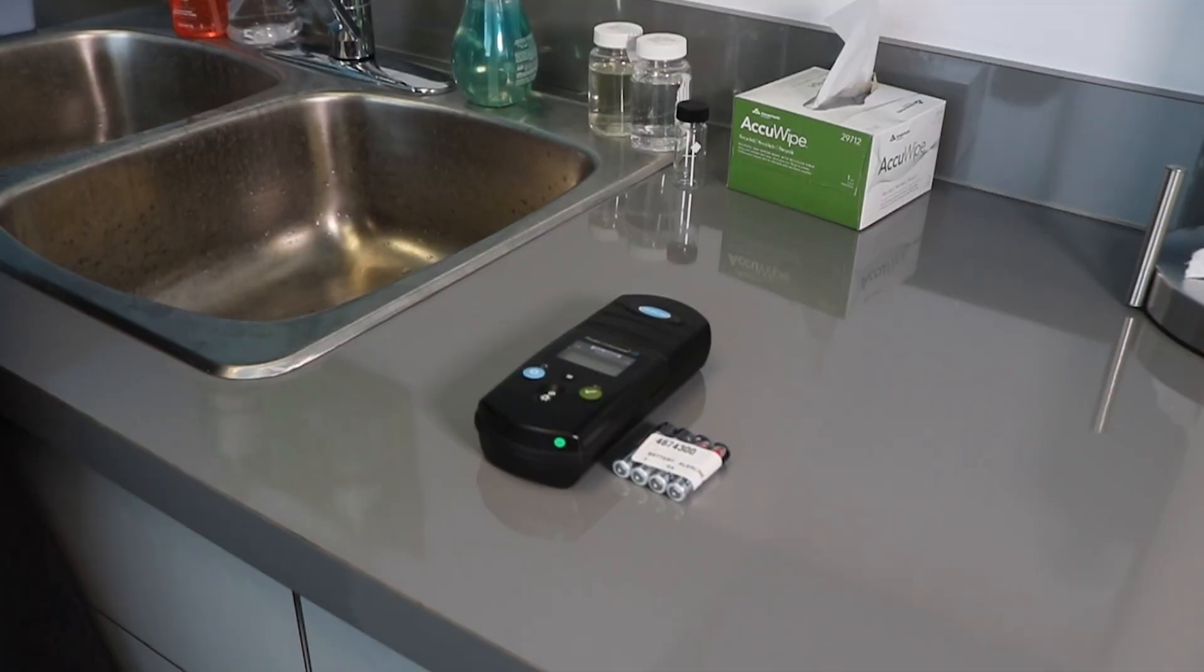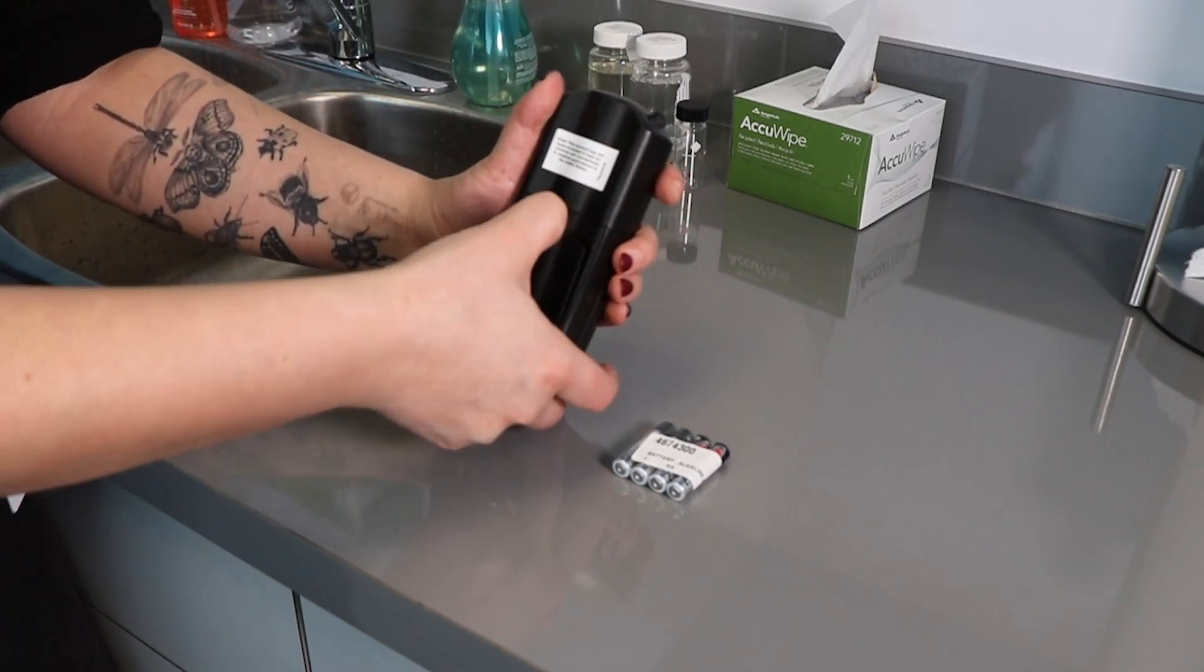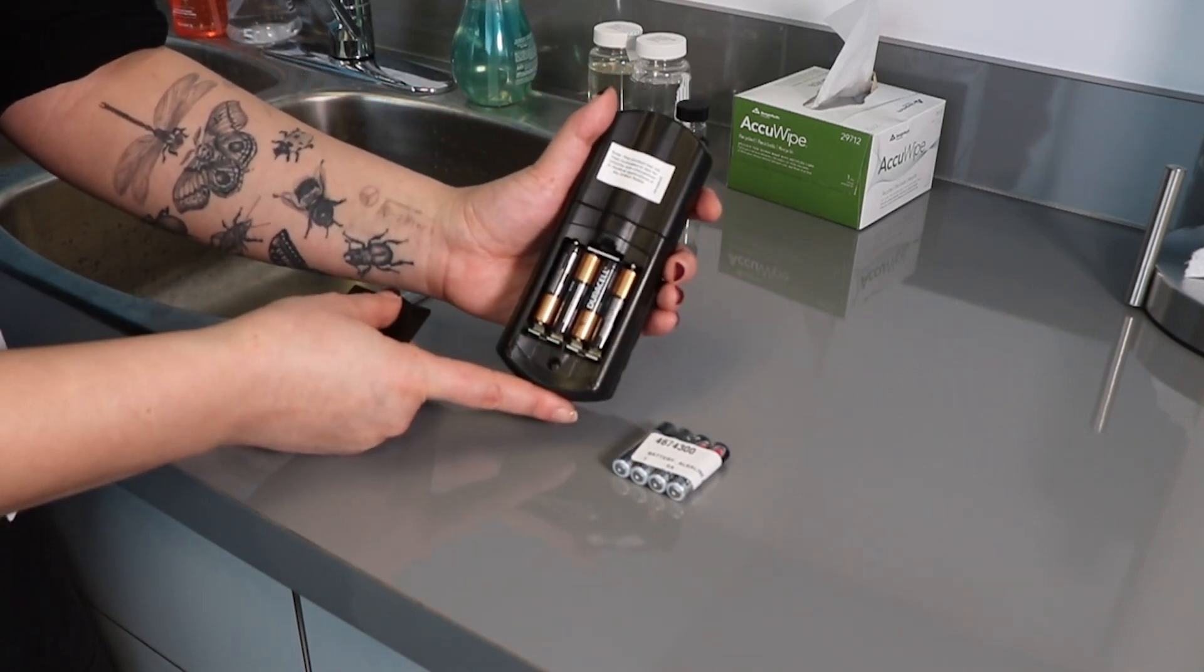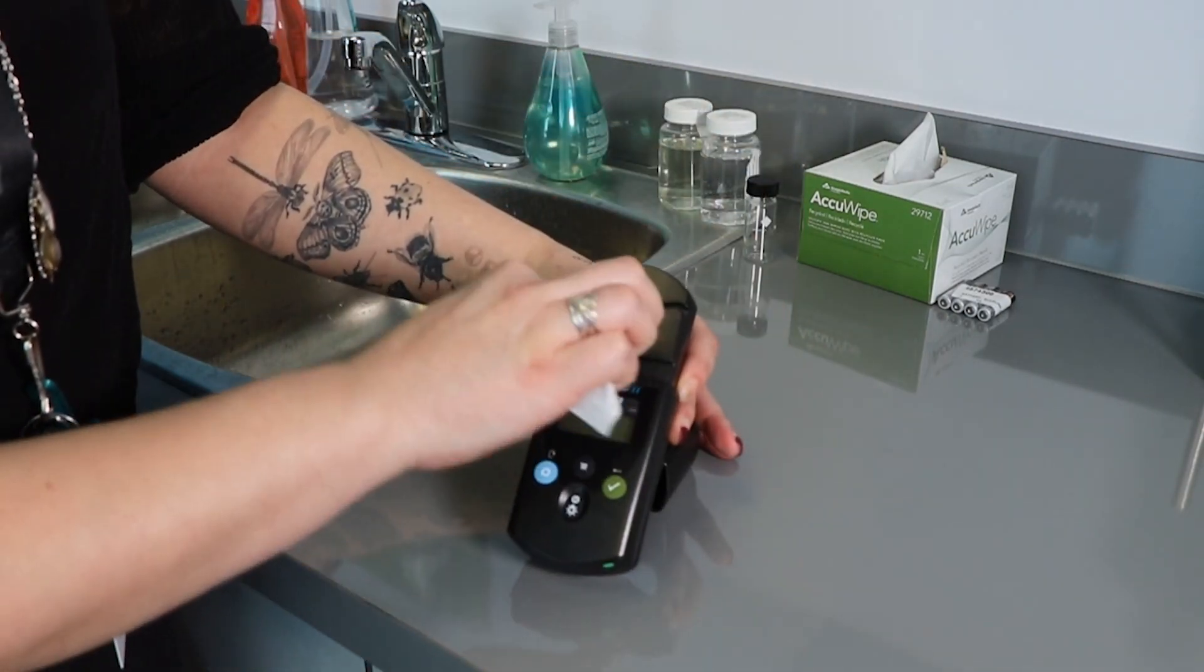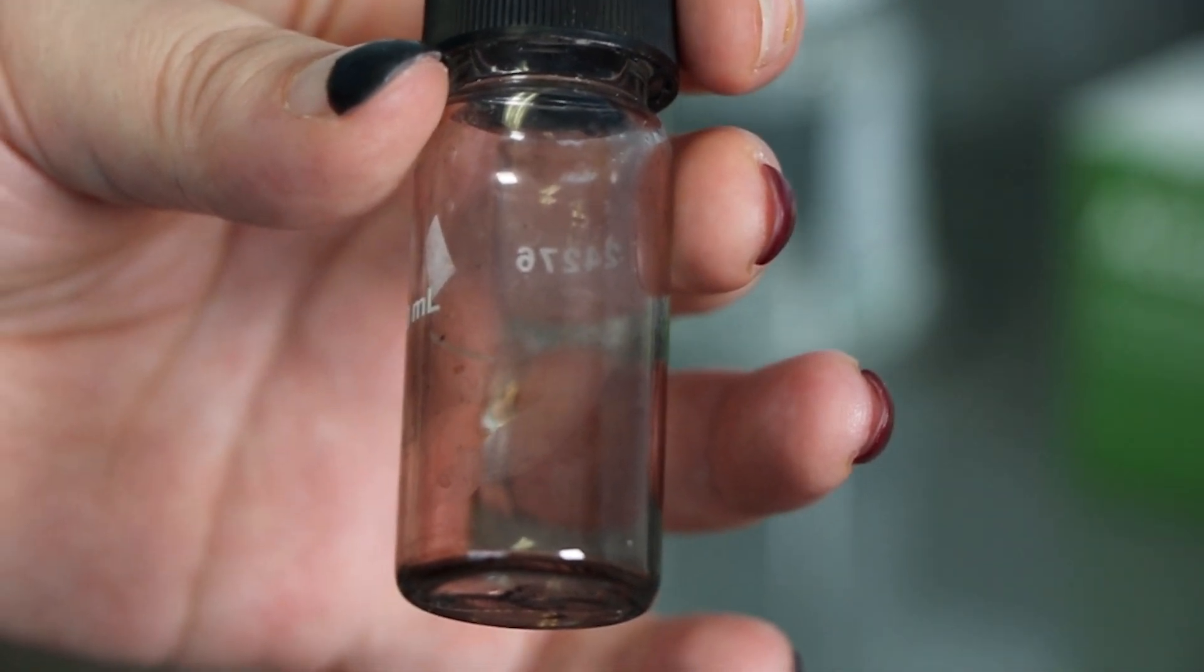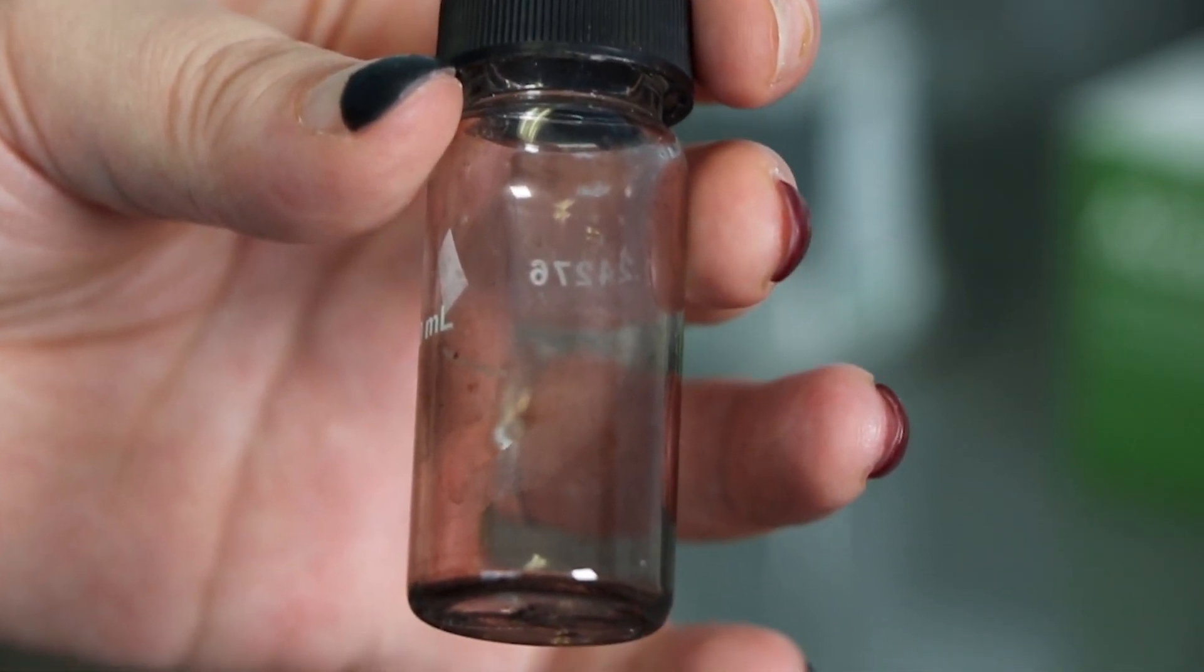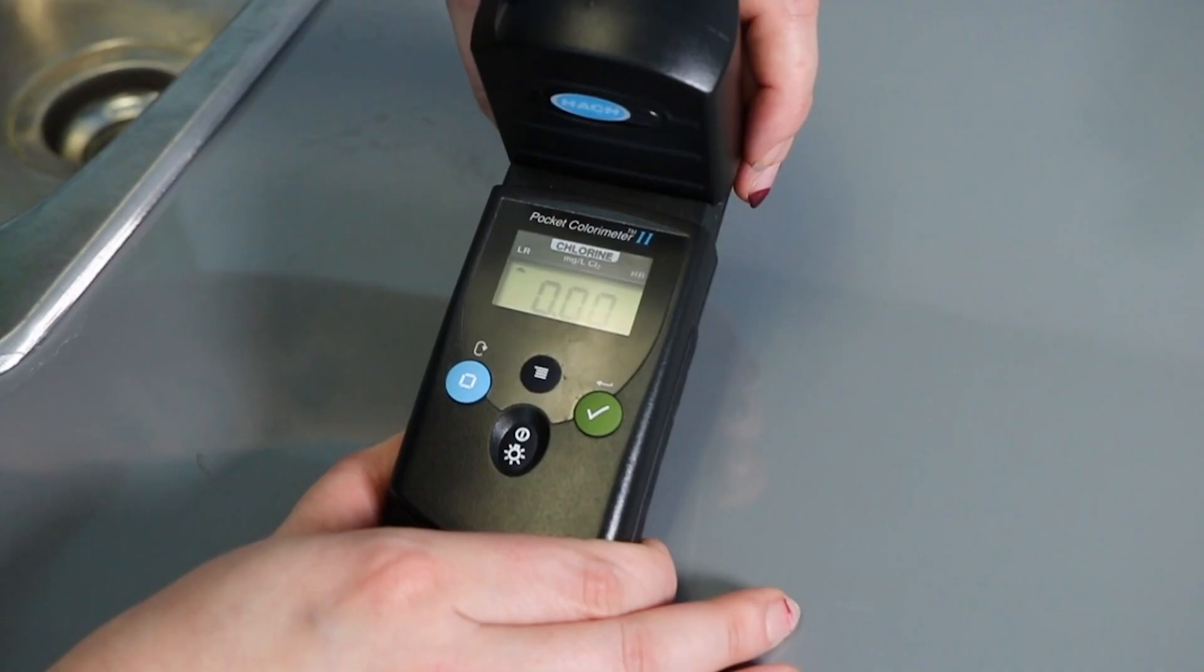If you are consistently getting readings that are outside of the normal range, it is important to troubleshoot your monitor and check for the following issues. Do the batteries need replacing? Is the light inside the monitor clean? Are the sample vials clean and unscratched? Leftover reagent will stain your vials. Have you properly zeroed or blanked your monitor before taking your readings?